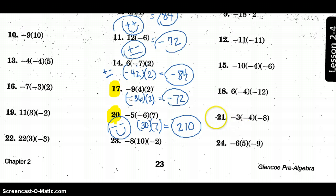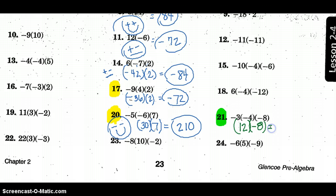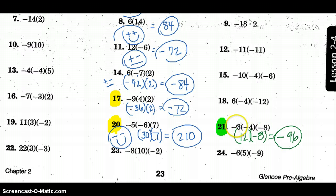If you had three negative signs, beware of problem 21. Let's do that one together. Negative times negative is positive — so that's positive 12. Then times negative 8: 8 times 12 is 96, but it's negative 96 because of the opposite signs. I had 1, 2, 3 negative signs — an odd number — so an odd number of negative signs gives you a negative answer.